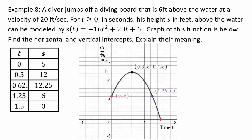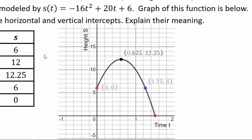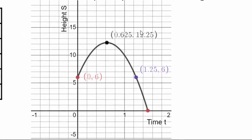But now you tell me what it represents. Here's the graph of it. I've already graphed it for you. You can also go and graph it on Desmos yourself. And you can see that 0.625, 12.25 is the maximum height that the diver is going to reach at 0.625 seconds.